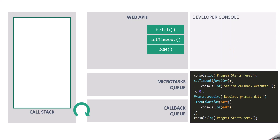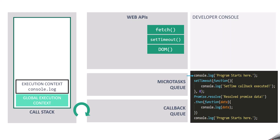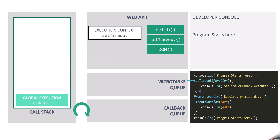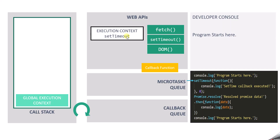Let's understand how this program will get executed and the order of the output. First of all, when we run this program, a global execution context will be created. From that context, we call console.log, which logs 'program starts here' and then pops off the execution stack. Then we call setTimeout — since it runs asynchronously, it is handed over to the web API. Since the time interval is zero, the execution of setTimeout completes immediately and its callback function is pushed to the callback queue immediately.